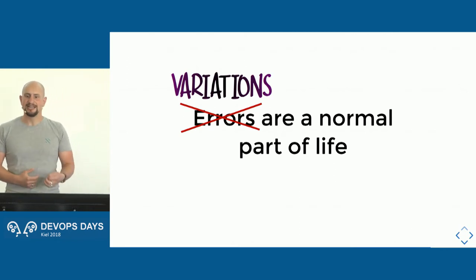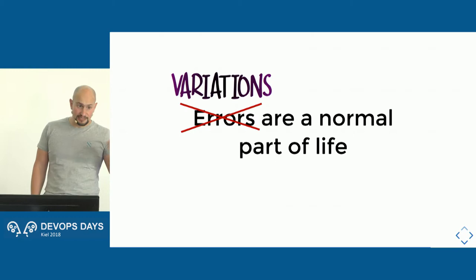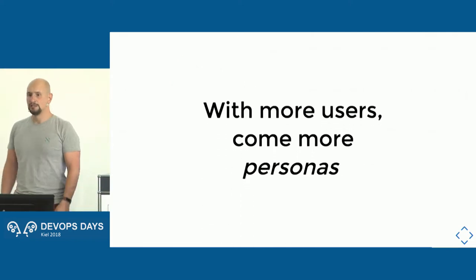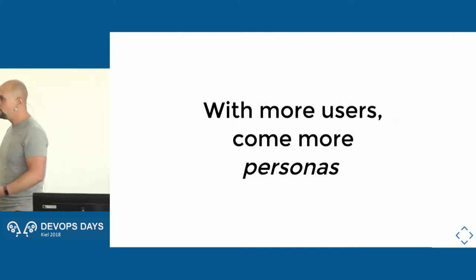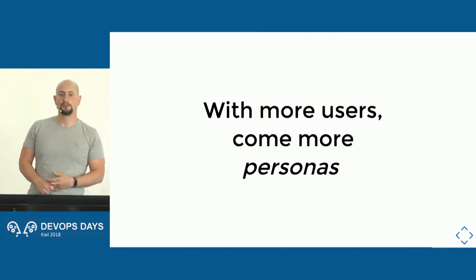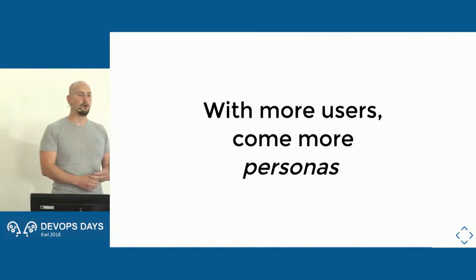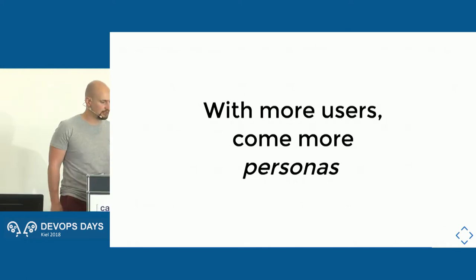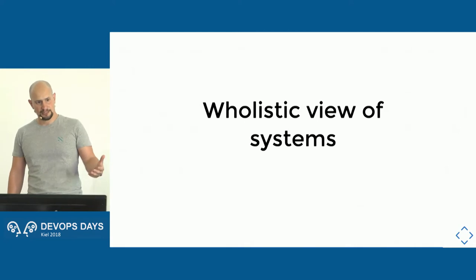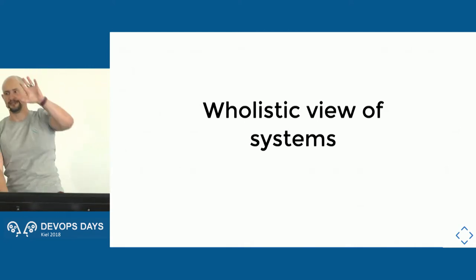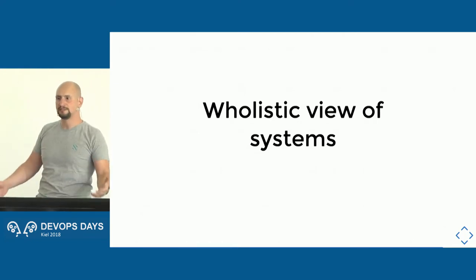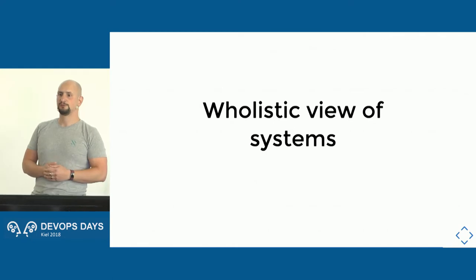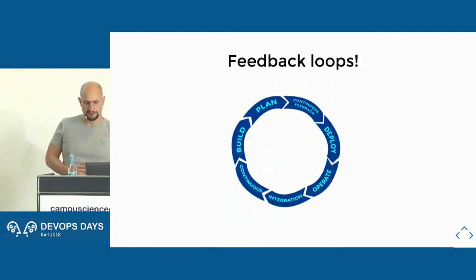Every person on this planet behaves slightly differently, and even that same person behaves differently day to day. Variation is an integral part of our lives — everything has variation. If you build a system that does not support variation, someone will have to fix that — customer support, developers, operators. The more users you have, the more variations, the more weird things people try to do, and the more personas you need to support. What we need is a holistic view of systems — understanding that when we do something here, it has an effect somewhere else.